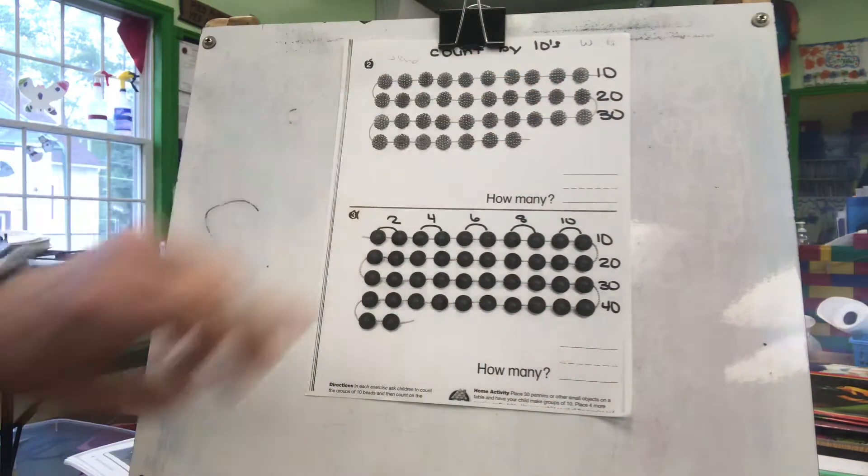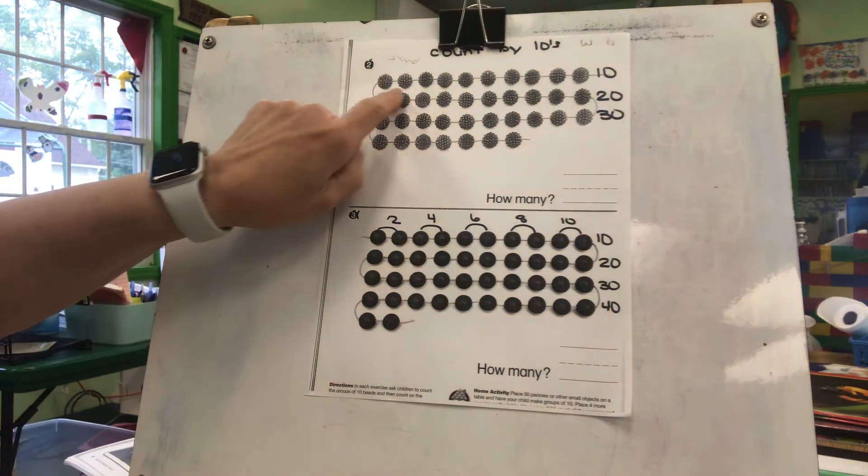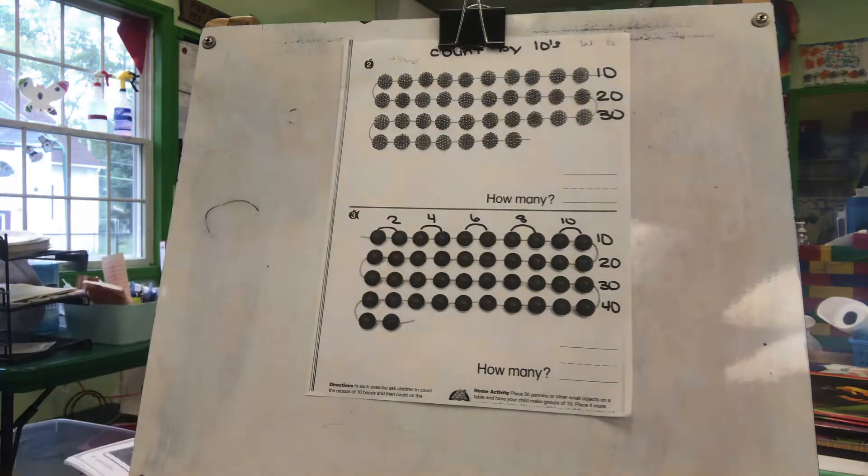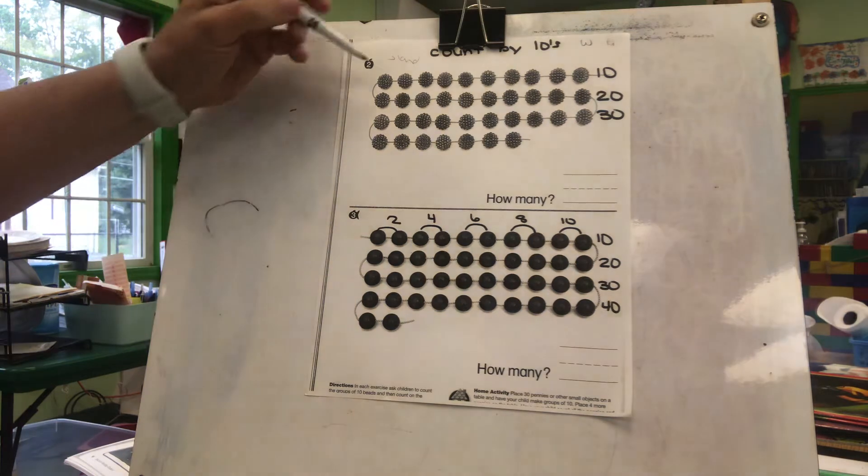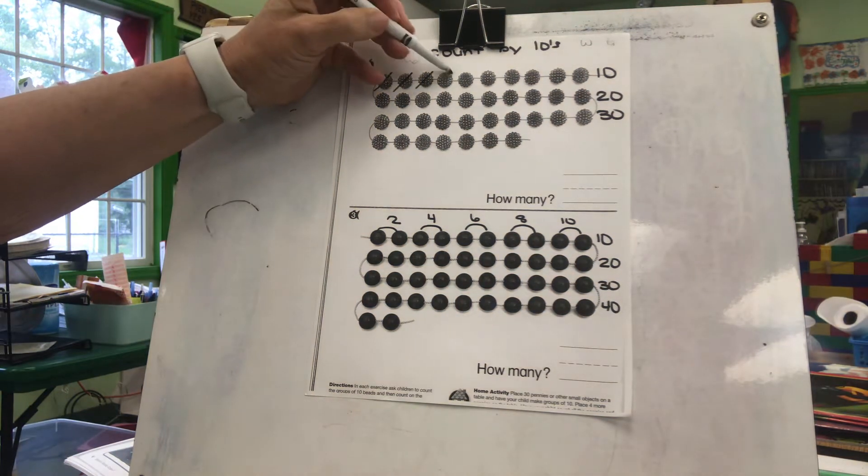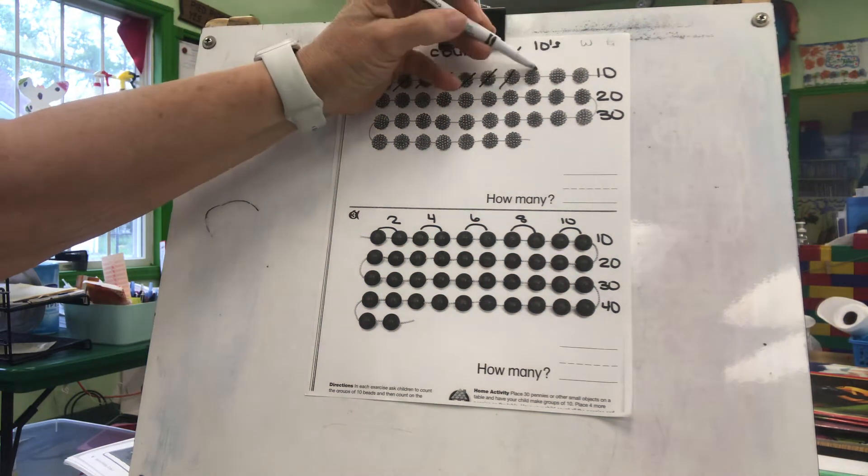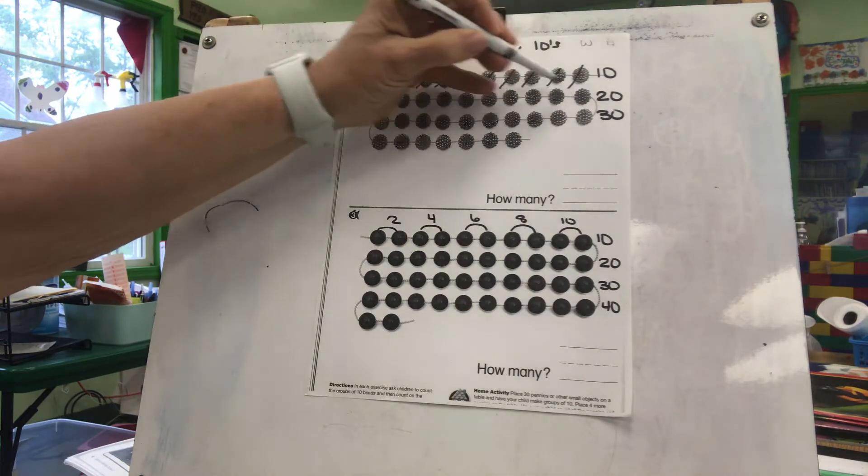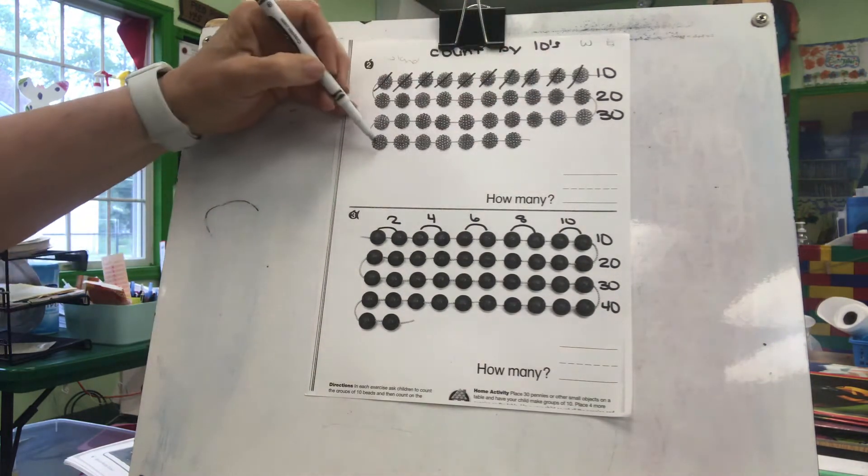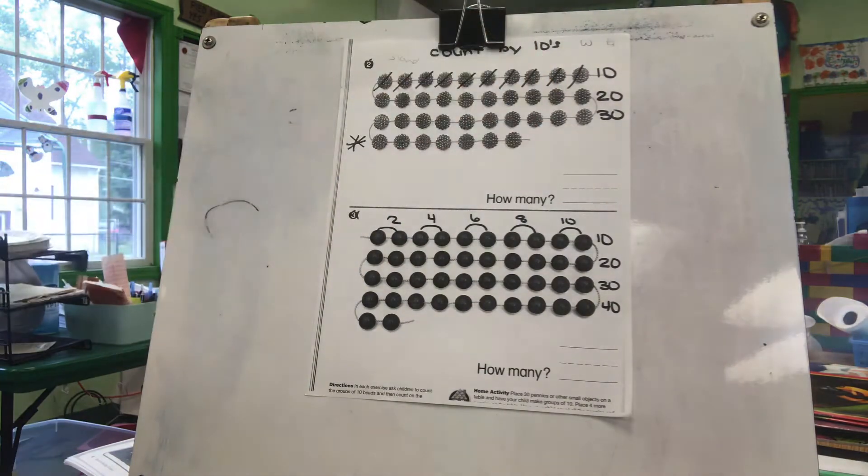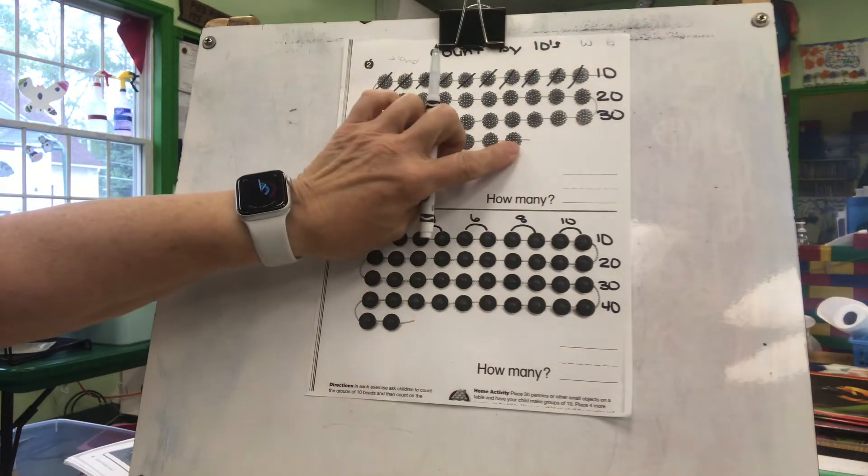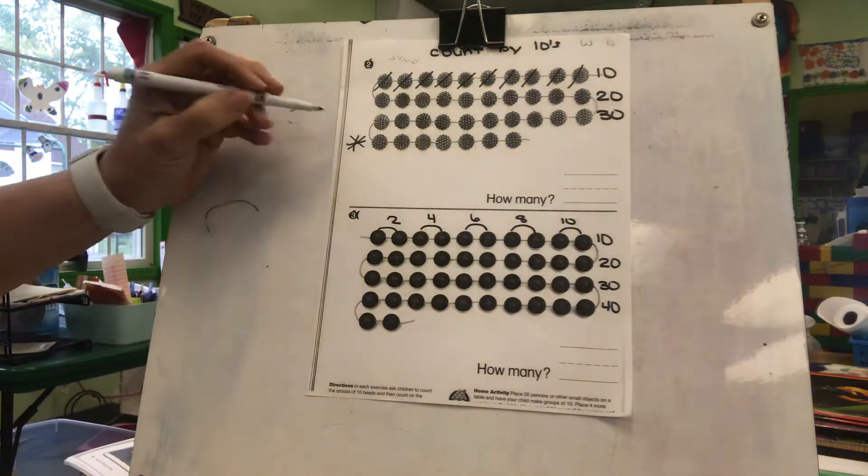These beads are arranged in groups of ten, so we don't have to count each individual bead. But if you want to check to make sure it is a group of ten, you can always count the first row. One, two, three, four, five, six, seven, eight, nine, ten. Then if we look they are the same, except for down here I'm gonna put a star because this row is not a group of ten.